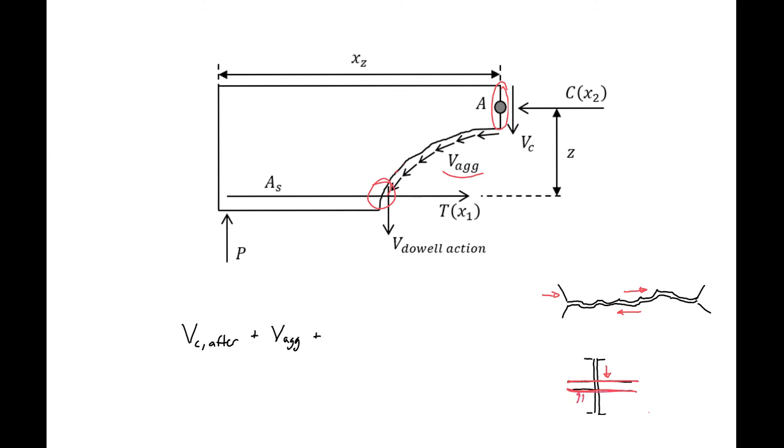So we'll develop some stresses at the bottom of that bar and at the top of the other bar. And those stresses in this bar will resist the sliding along this plane. So that'll give us our V dowel.